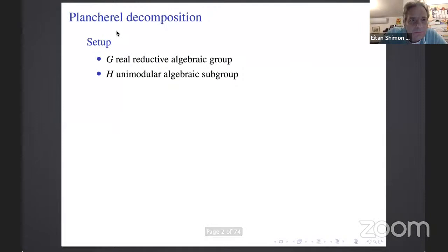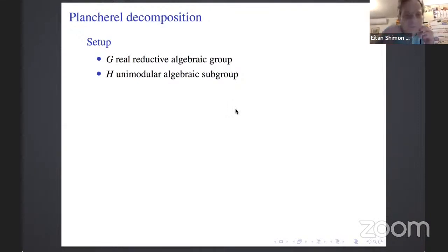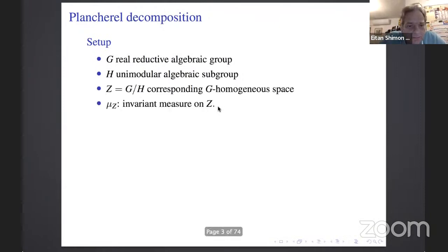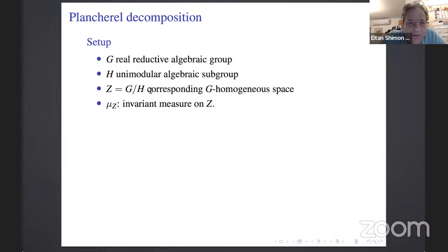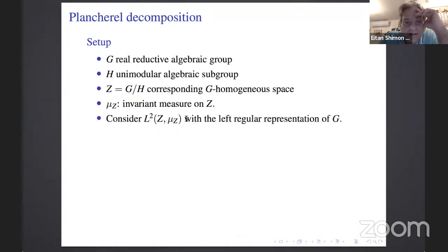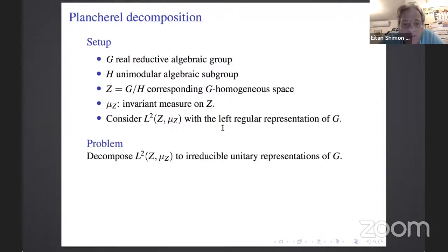What is it that we want to achieve when we talk about Plancherel decomposition? In our setup, G will be a real reductive group, H is going to be an algebraic subgroup which is unimodular, and we have a quotient space G mod H which is a G-homogeneous space. I'm not assuming anything about H apart from unimodularity, and this allows us to obtain a G-invariant measure on Z = G/H.